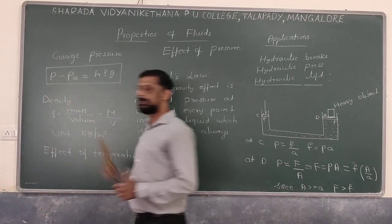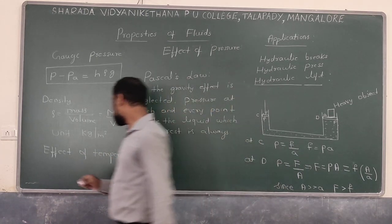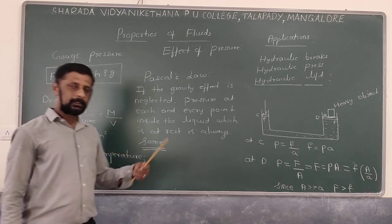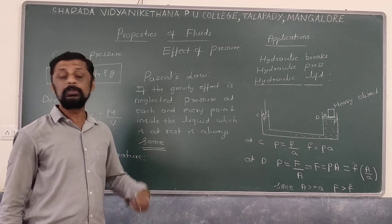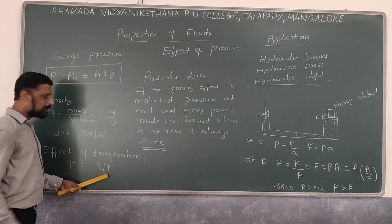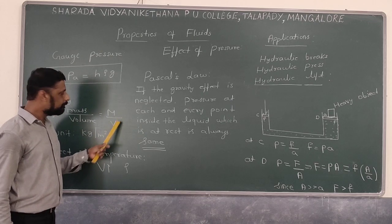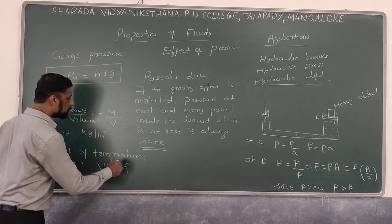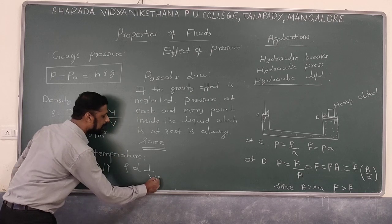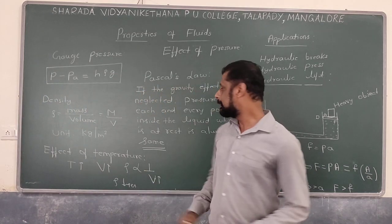What are the factors affecting the density of a fluid? First, the effect of temperature. As temperature increases, all material states — solids, liquids, and gases — undergo expansion, meaning volume increases. Since density = mass/volume and mass remains the same, density is inversely proportional to volume. Therefore, as temperature increases, volume increases and density decreases.